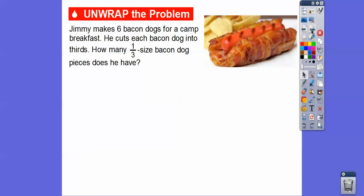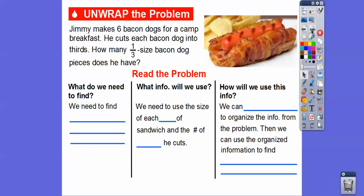So Jimmy makes six bacon dogs for a camp breakfast. He cuts each bacon dog into thirds. How many third-size bacon dog pieces does he have? We need to find this: how many third-size bacon dog pieces does he have? We'll use the size of each cut and the number of pieces he cuts.